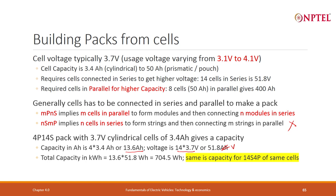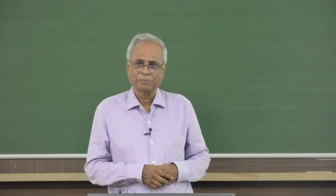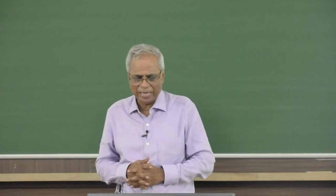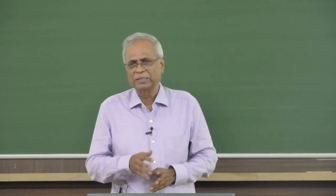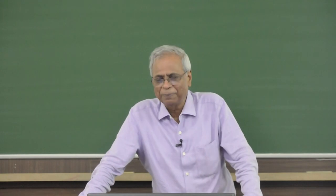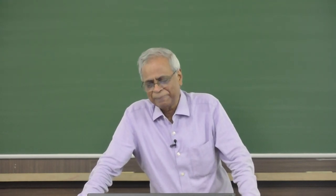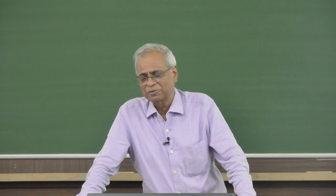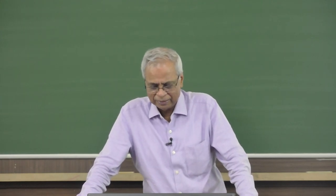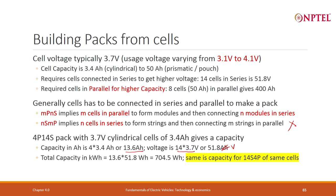What if I did 14S first and then 4P? The total capacity will be the same, but there are other impacts. In a simple way, 4 × 14 = 56 cells multiplied by the cell capacity in AH multiplied by 3.7 volts gives the total capacity. MPNS versus NSMP will be examined further, and you will see that NSMP is not a good way to design and is not used.